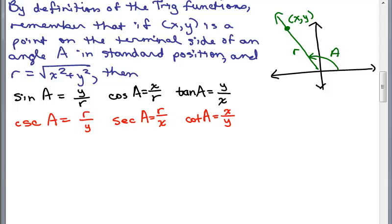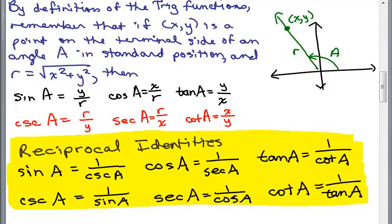The first identity is the reciprocal identities. The sine of A is y over r, but the cosecant of A is r over y, so these are simply reciprocals. That tells us that sine of A is 1 over cosecant of A, and cosecant of A is 1 over sine of A. Similarly, cosine and secant are reciprocals, and tangent and cotangent are reciprocals. So any time you see cotangent of A, you could write it as 1 over tangent of A.